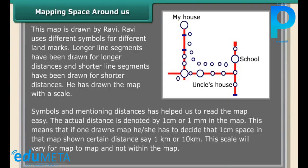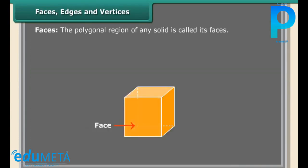Symbols and mentioning distances has helped us to read the map easily. The actual distance is denoted by 1 cm or 1 mm in the map. This means that if one draws a map, he or she has to decide that 1 cm space in that map shows a certain distance, say 1 km or 10 km. This scale will vary for map to map and not within the map.